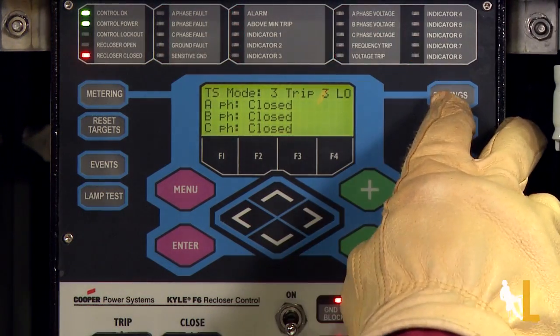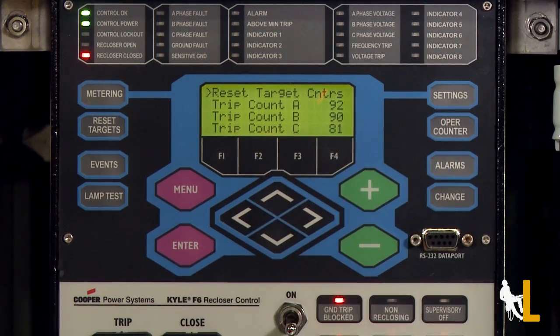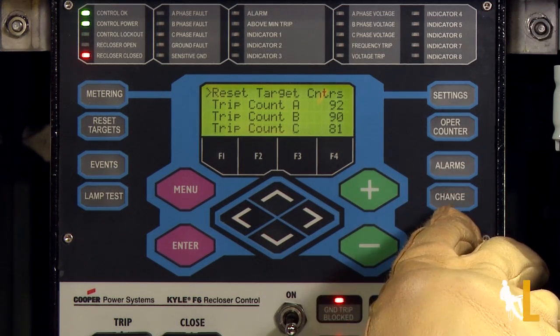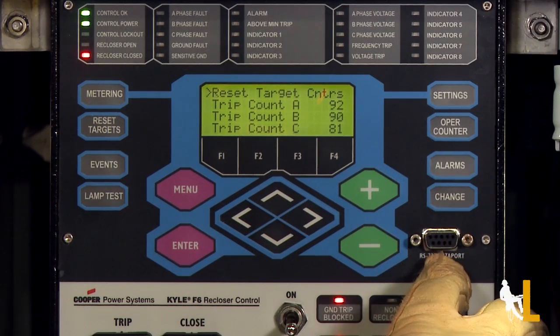Settings will show an operations menu. The operations counter will display how many operations the device has had. Alarms will show the status of each alarm. And once again, the change button will enable or disable the function keys below. Below that is a port for connecting a laptop.